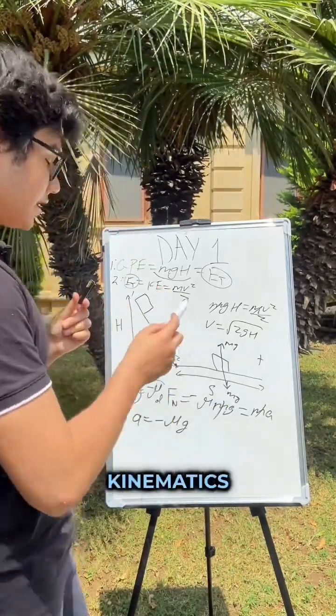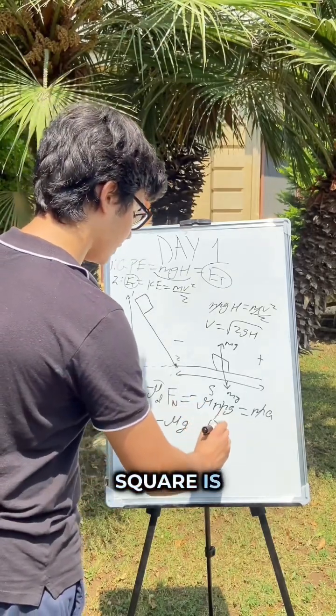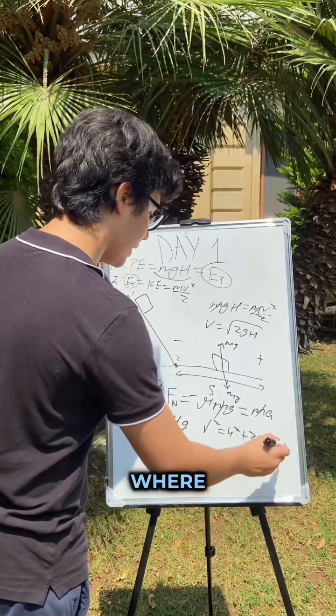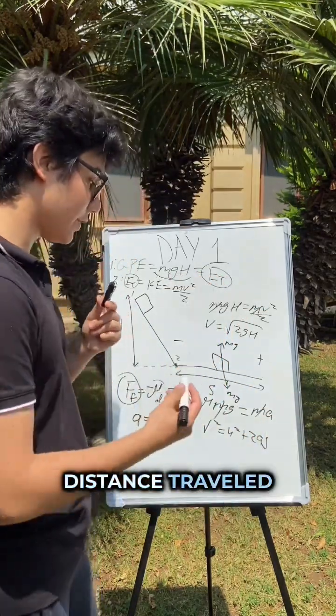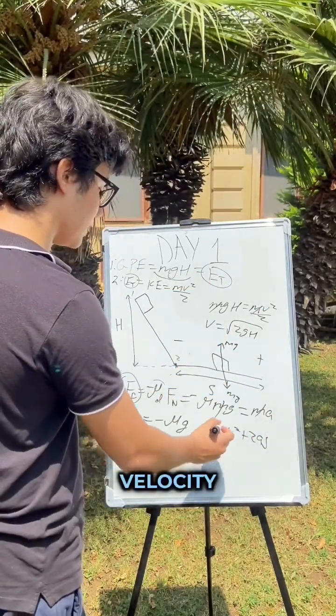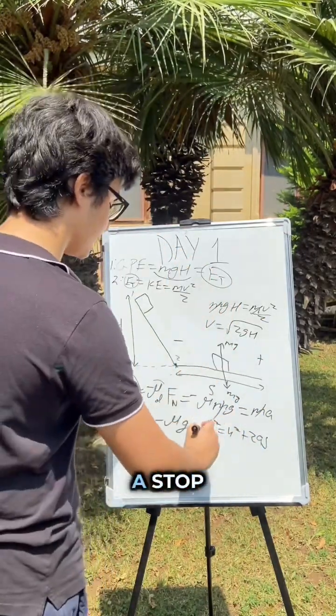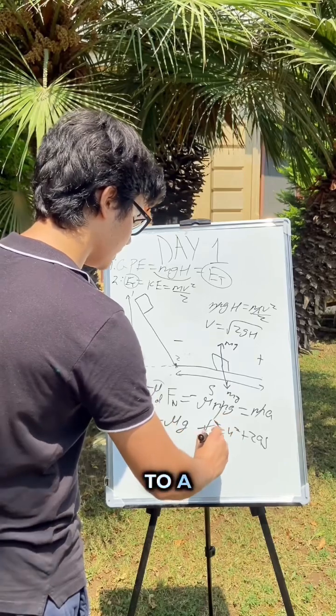Let's use the kinematics equation given by v squared equals u squared plus 2as, where a is the acceleration and s is the distance traveled. We know that v is the final velocity and u is the initial velocity. The final velocity here will be zero since our object will come to a stop, so this becomes zero.